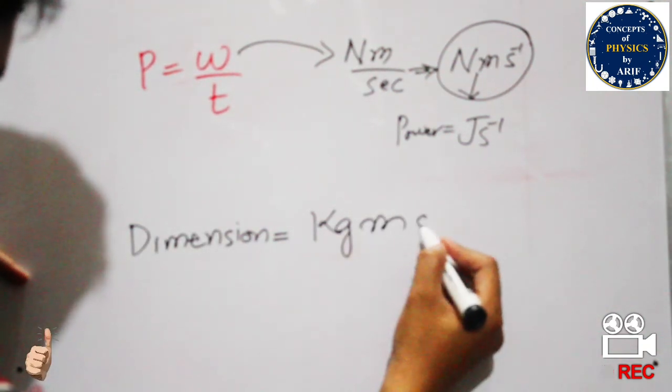We know that Newton is kilogram meter per second squared, and meter per second. So this is Newton, this is meter, and this is per second. So if we join these terms, the formula will be kilogram meter squared per second cubed, and its dimension will be: dimension of kilogram is M, dimension of meter is length L squared, and dimension of second is time T minus 3.